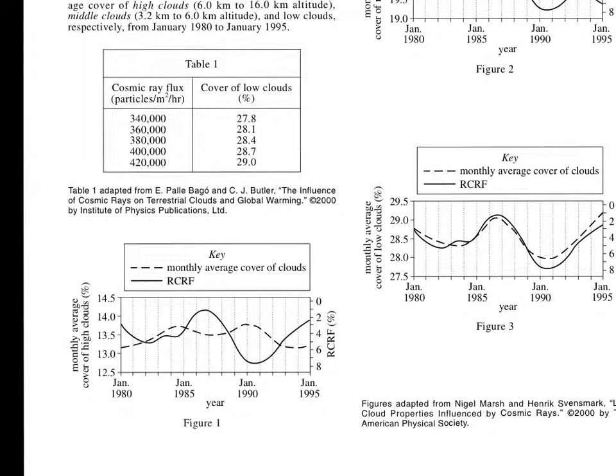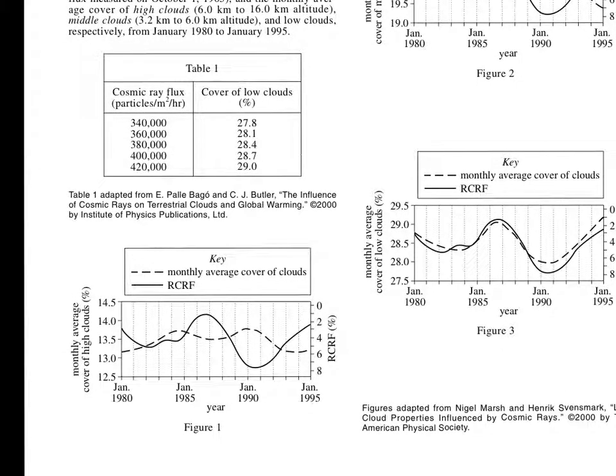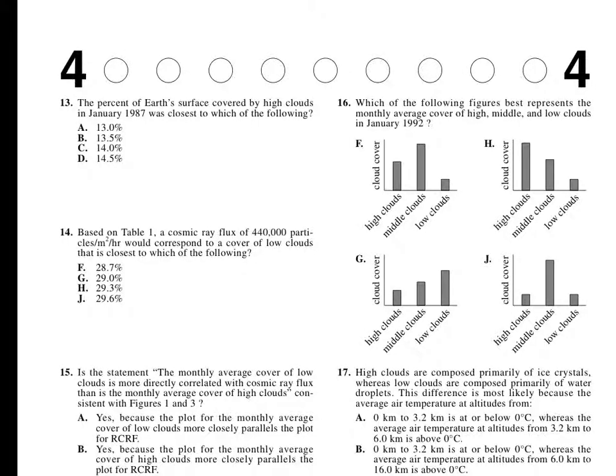It's January 1987. So we're going to go 1985, 86, 87. Monthly average cover of clouds is the dotted line, and we want that. And that looks to be right about 13.5. So let's go back to the questions. 13.5 is B, and that is the correct answer.